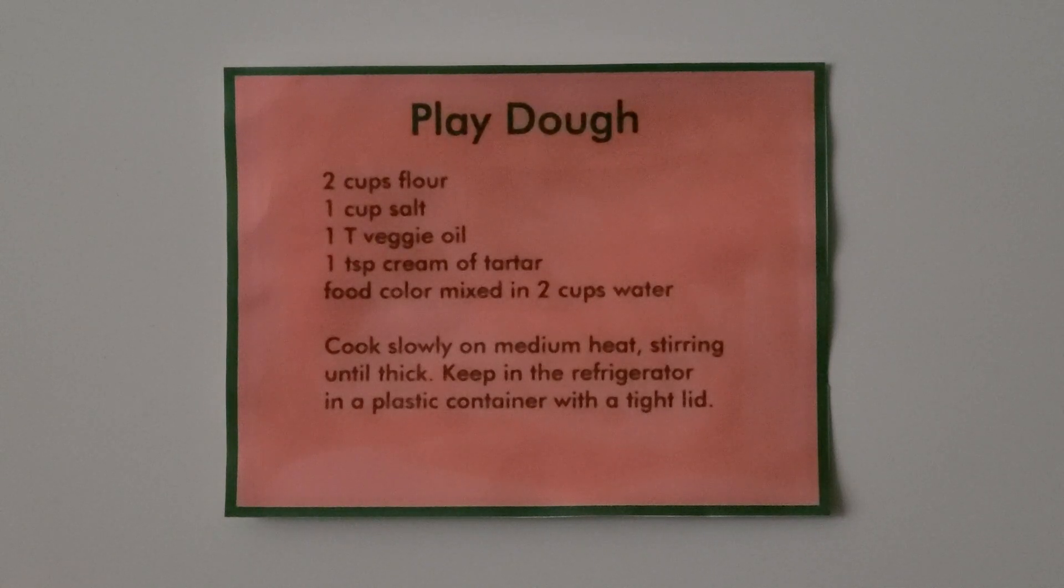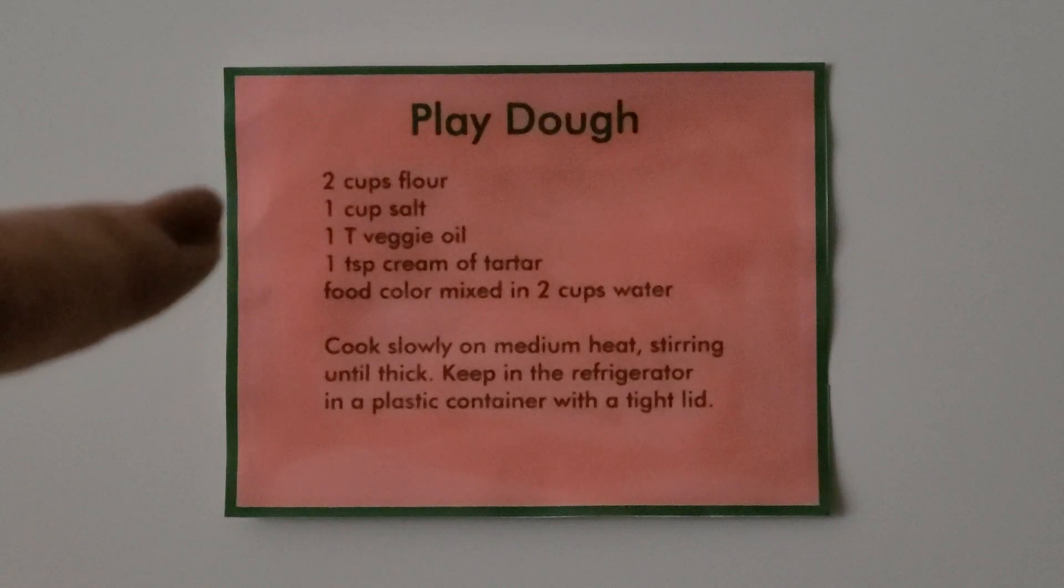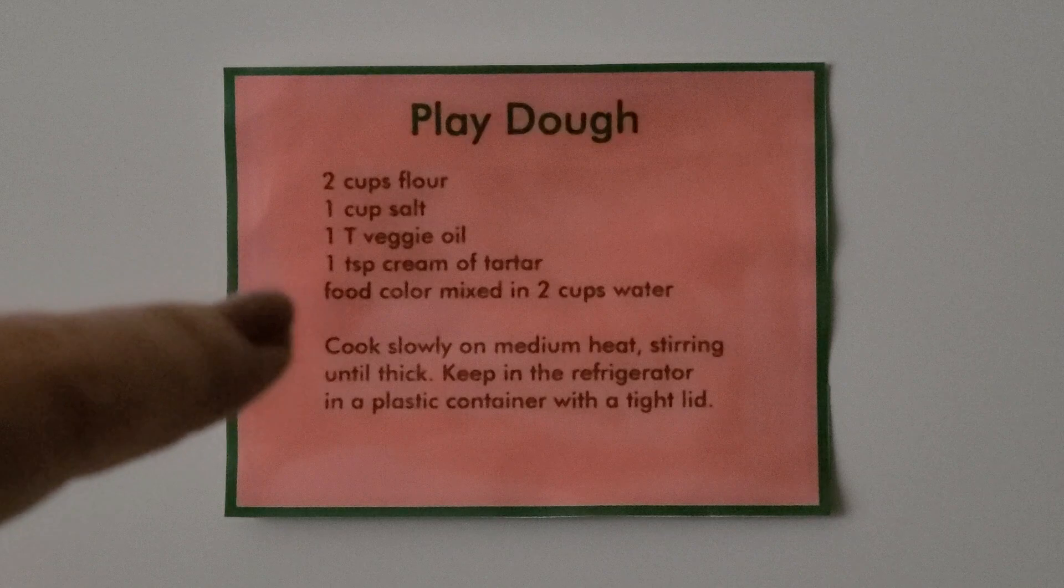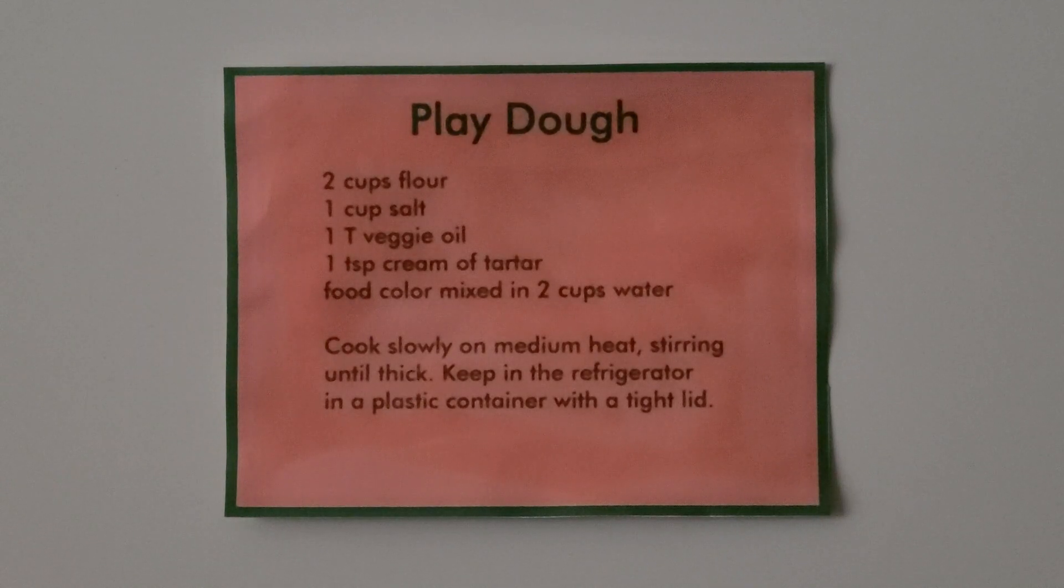If you want to make your own play-doh, here's the recipe. You need two cups of flour, one cup of salt, one tablespoon of vegetable oil, and one teaspoon of cream of tartar. You need food color mixed in two cups of water. And you cook it slowly on medium heat, stirring until it's thick. And you can keep it in the refrigerator in a plastic container with a tight lid.